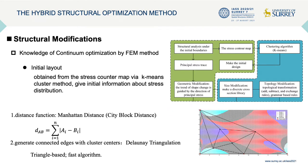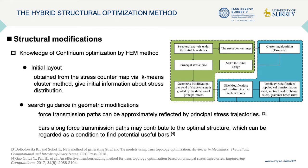For the first part, the structural modification is to change the truss layout by both FEM-based and grammar-based approaches. The knowledge of continual optimization by FEM method can help to construct the initial truss layout. This is obtained from the truss contour map where K-means clustering gives initial information about the stress distribution. We use Manhattan distance and Delaunay triangulations to generate connected edges with cluster centers — a triangle-based, fast algorithm. The second use is search guidance in geometric modification, because force transmission paths can be approximately reflected by the principal stress strategies, and bars along force transmission paths may contribute to the optimal structure.